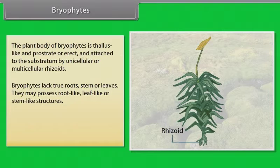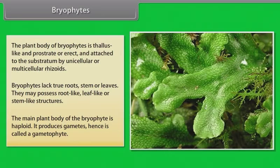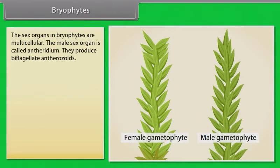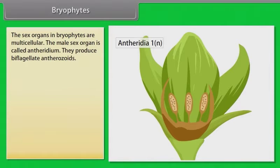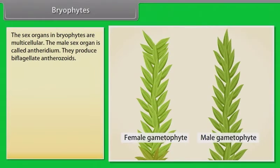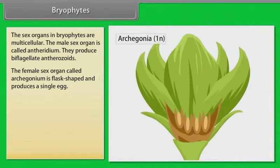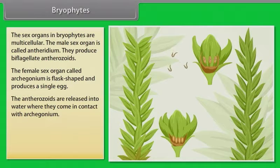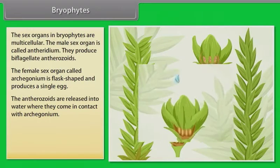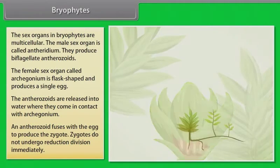Bryophytes lack true roots, stem or leaves. They may possess root-like, leaf-like or stem-like structures. The main plant body of the bryophyte is haploid. It produces gametes hence is called a gametophyte. The sex organs in bryophytes are multicellular. The male sex organ is called antheridium. They produce biflagellate antherozoids. The female sex organ called archegonium is flask-shaped and produces a single egg. The antherozoids are released into water where they come in contact with archegonium.